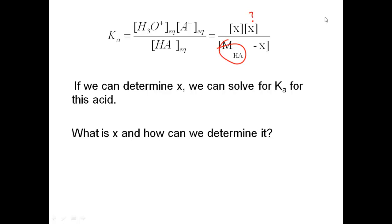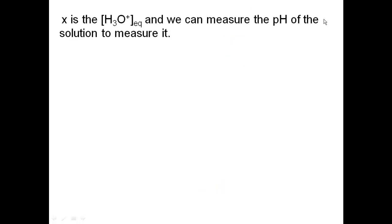So, if we can determine X, we can solve for the Ka for this acid. So, what is X? How can I determine it? Well, looking at it, you can see in one spot that X is equal to my concentration of my hydronium ion. Is there a way that I can solve for my concentration of hydronium ion? Is that related to anything? Well, I can measure the pH of a solution. If I measure the pH of a solution, then I can get the hydronium, which is going to be my equilibrium quantity of hydronium, and then I can plug it into my equation and solve for Ka.